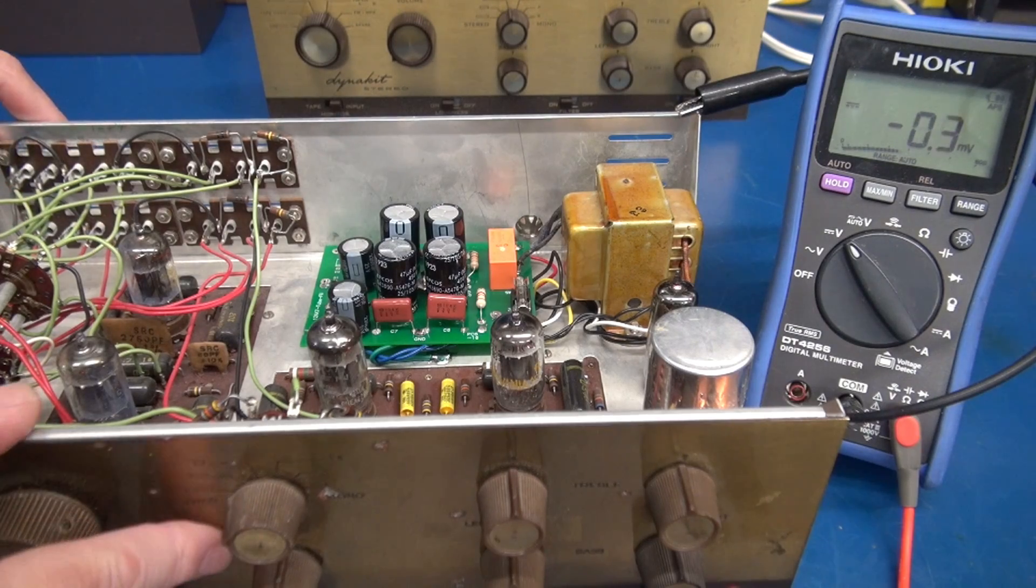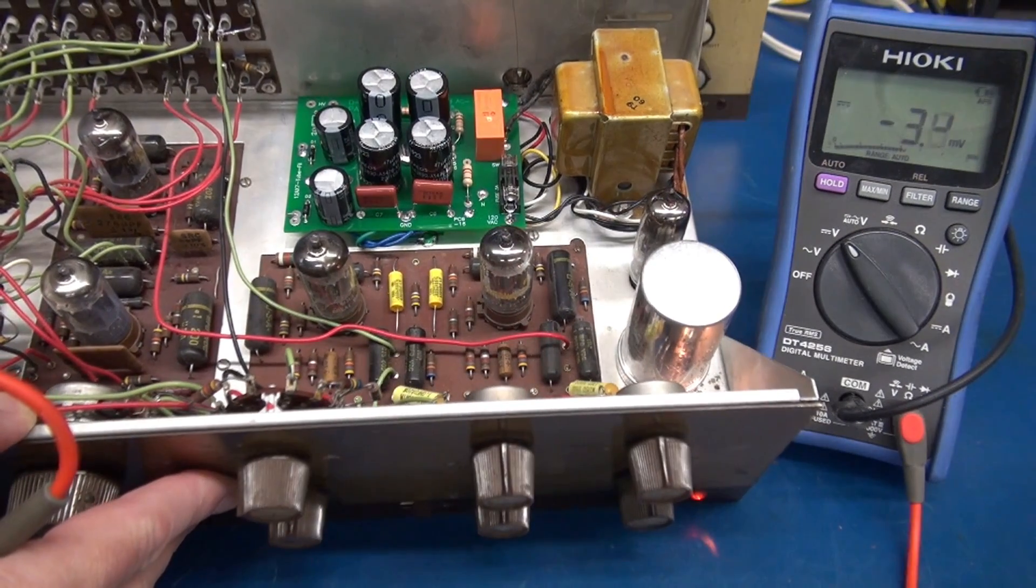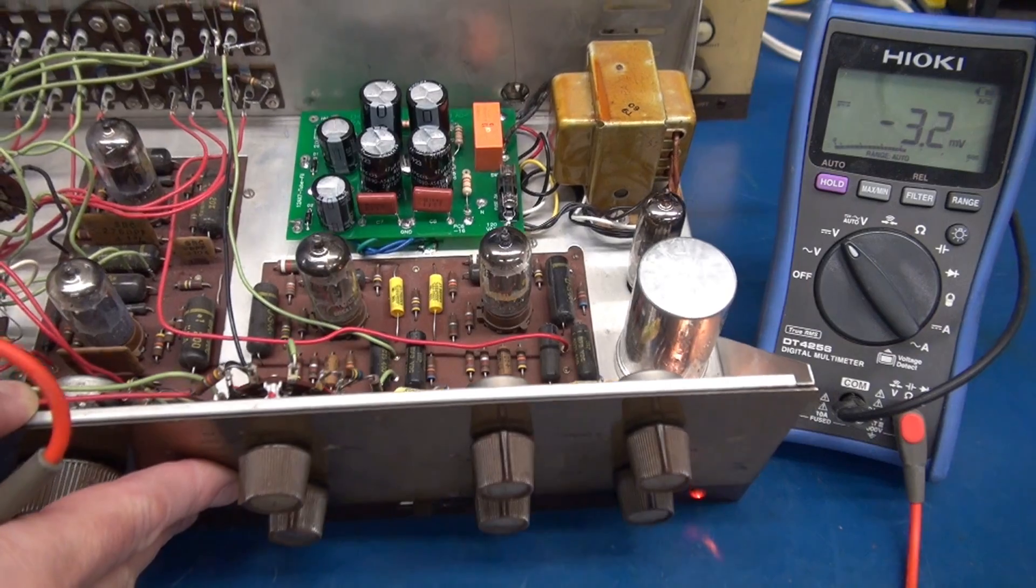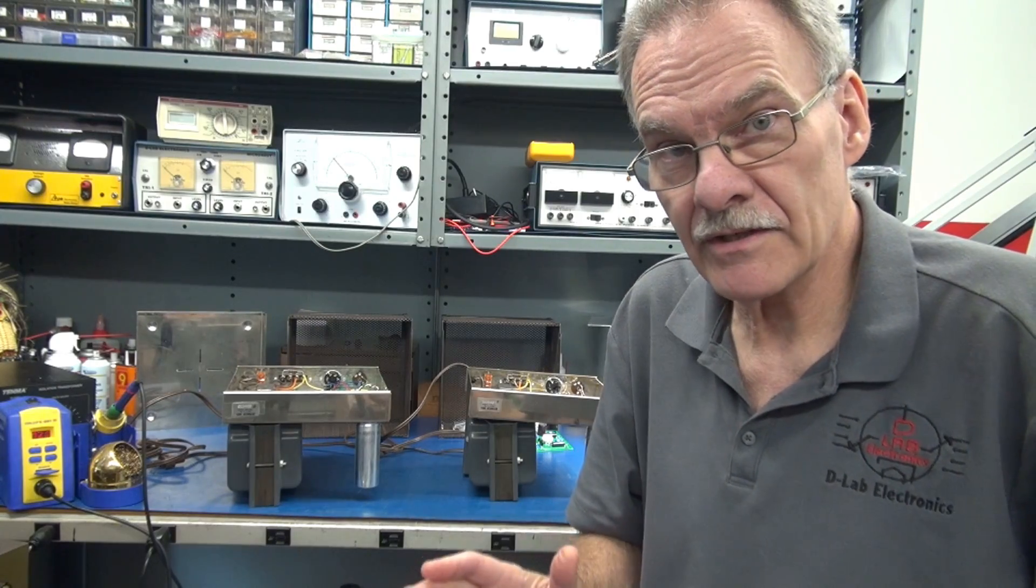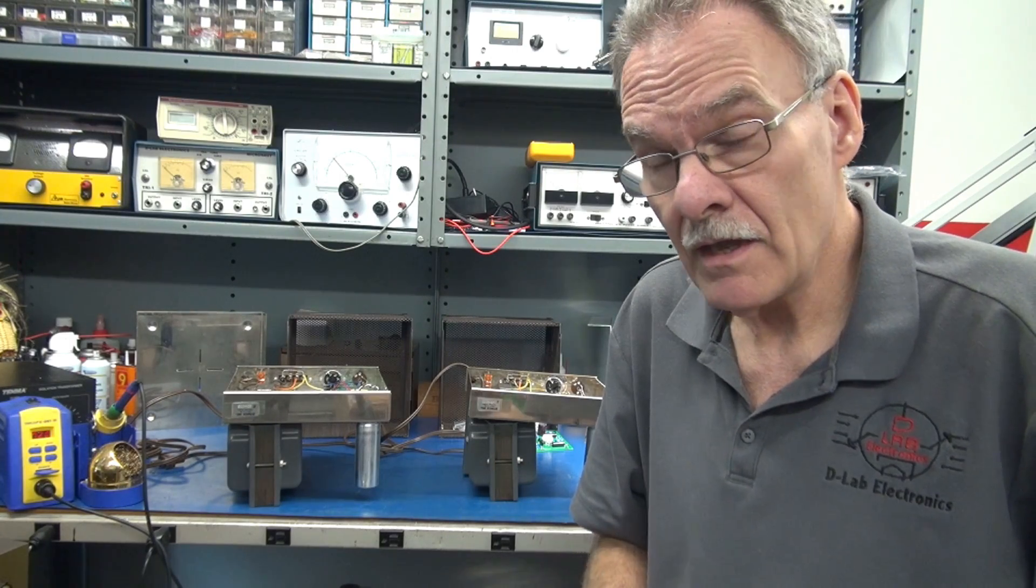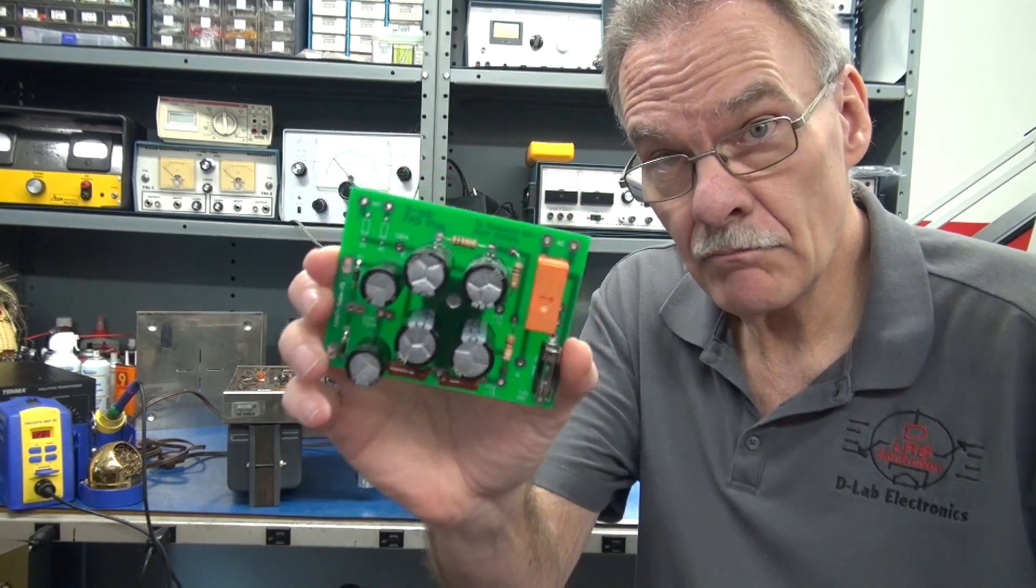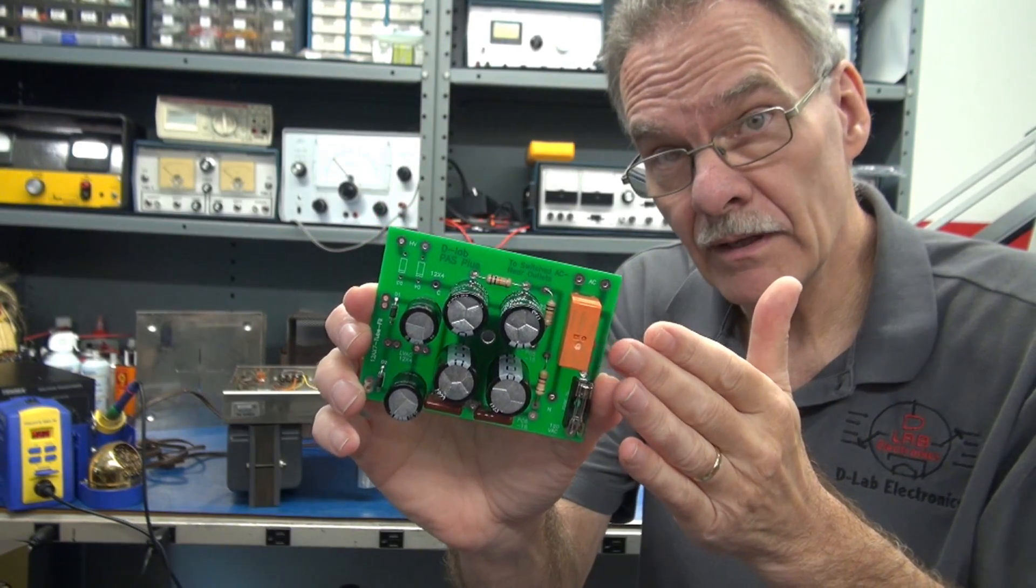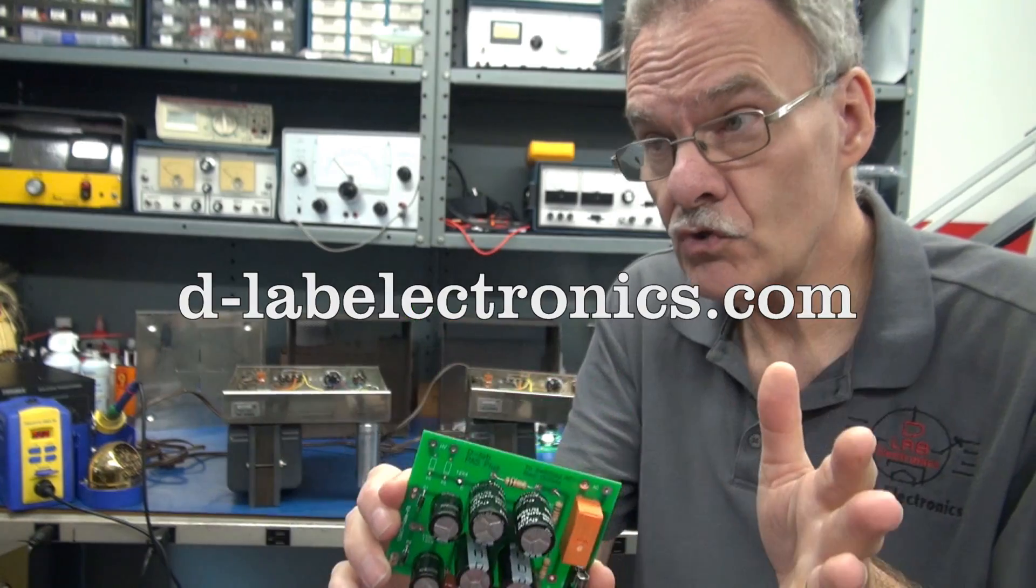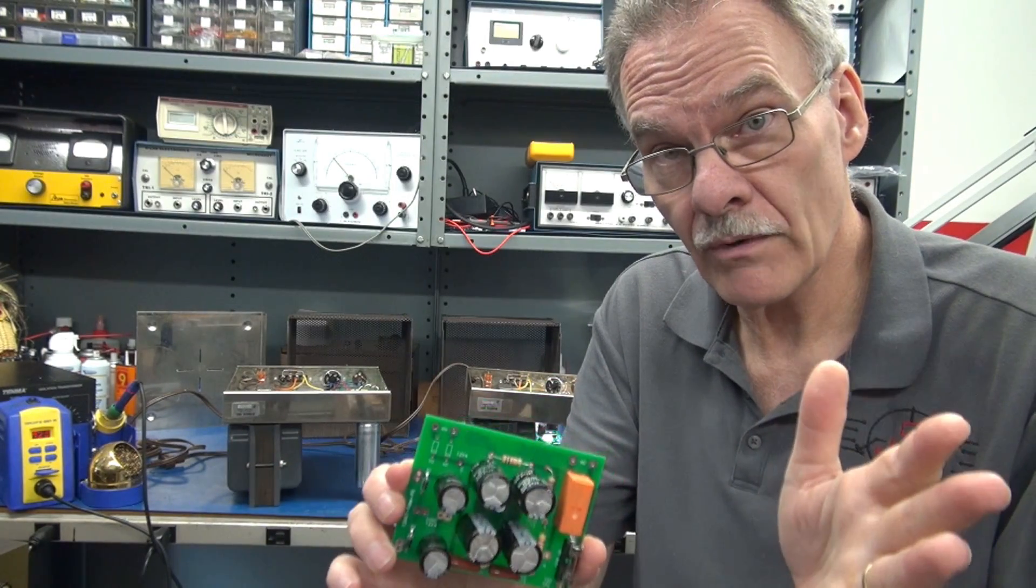But remember, this thing is still full of those Black Beauties. To do it right, you need to change them all. That's a wrap on the tech tips for the DynaKit PAS preamp. If you're interested in one of these boards to rebuild yours, you can find these on D-LabElectronics.com or shoot me an email for more information.